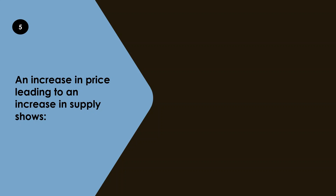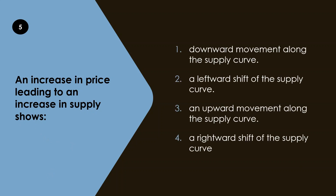Question 5: An increase in price leading to an increase in supply shows what? The options are downward movement, leftward shift, upward movement, and rightward shift. Remember: when there is a change in demand or supply due to a change in price, we are talking about movement along the same curve. When the change is due to any factor other than price, we talk about shifts. Here, price is changing, so the answer must be movement along the curve — specifically, upward movement along the supply curve.